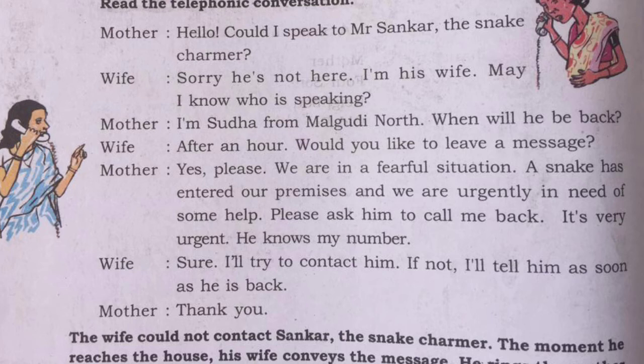Given below are a few tongue twisters. Take turns to read them aloud. The tongue twisters are to be read at speed. Let's start: 'A good cook could cook as much as a good cook who could cook cookies.' Second: 'Black bug bit a big black bear, but where is the big black bear that the big black bug bit?' Third: 'The sixth sick sheep is sick.'